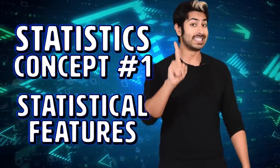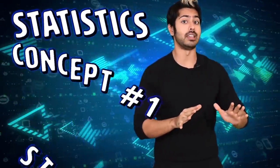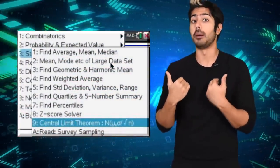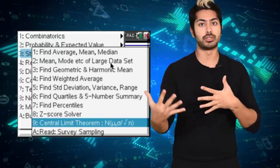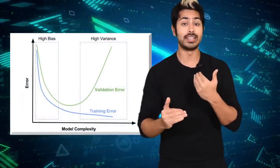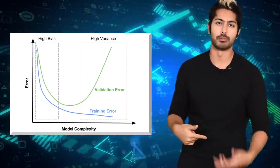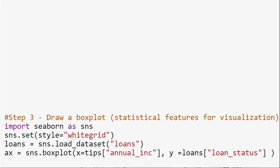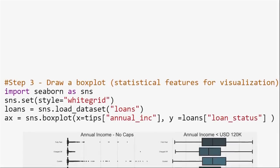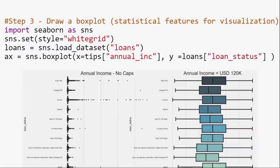Let's start with the first statistics concept we can use here: statistical features. This is probably the most used statistics concept in data science. It's usually the first technique we would apply when exploring a dataset, and includes concepts like bias, variance, mean, median, percentiles, and many others. They're all easy to understand and implement in code. I've linked to a detailed cheat sheet in the video description. To visualize some of these statistical features, let's create what's called a box plot to examine the relationship between income and loan amount.